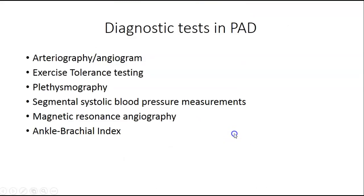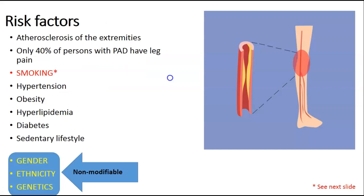Diagnostic tests with peripheral arterial disease can range from arteriograms to an ankle brachial index. For testing purposes, you're not going to be specifically tested on any of these. Some risk factors — it's a lot like other cardiac diseases.